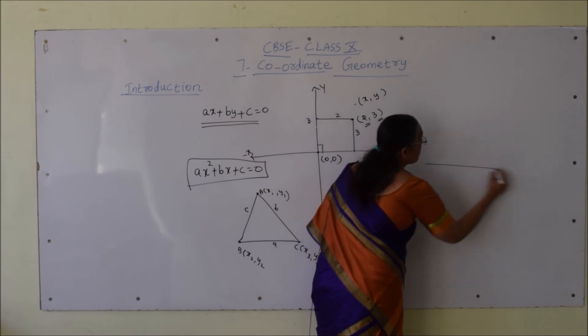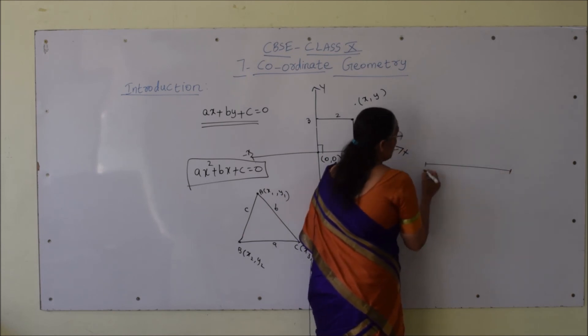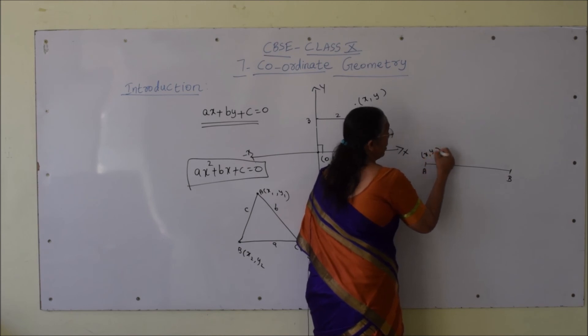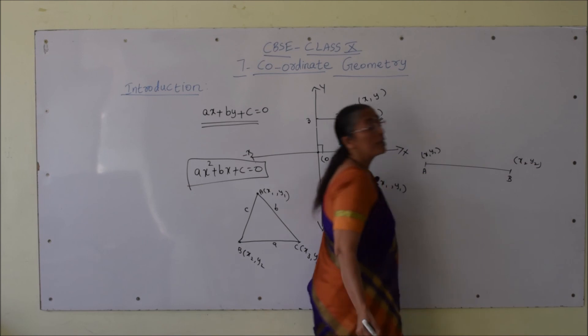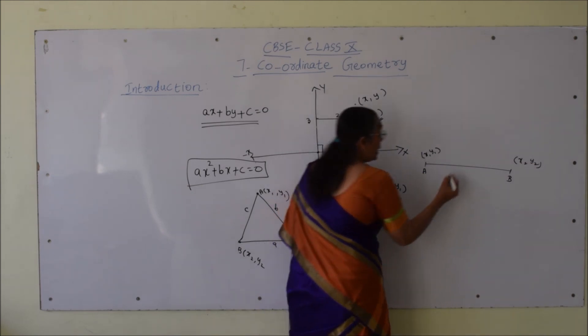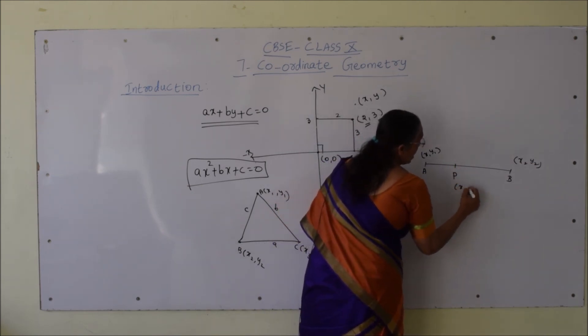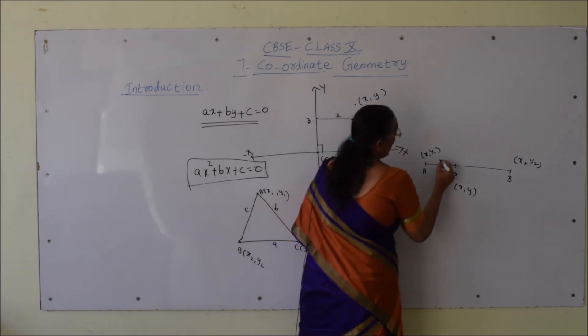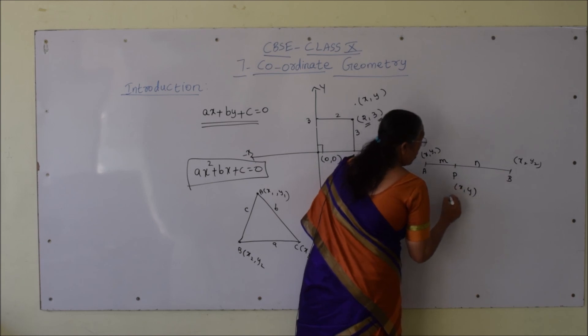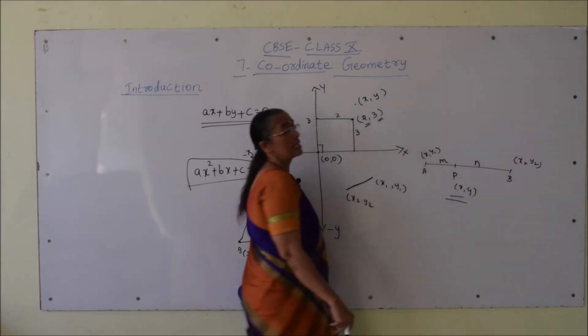is if a line segment AB, where point A is (x₁, y₁) and point B is (x₂, y₂), is divided by another point P(x, y) in the ratio m:n, then how can we find this point (x, y)?